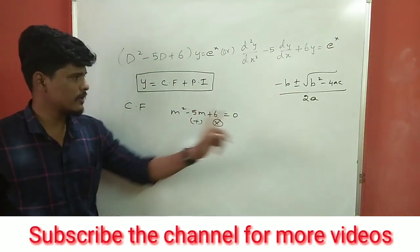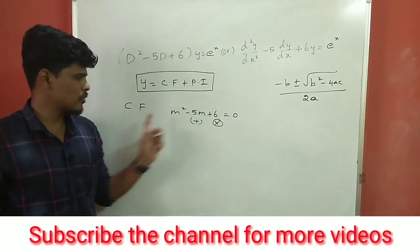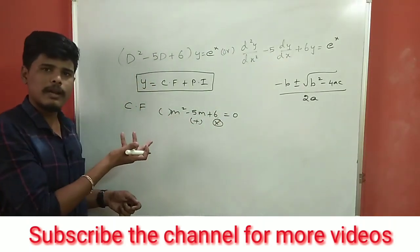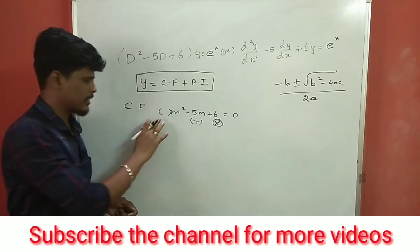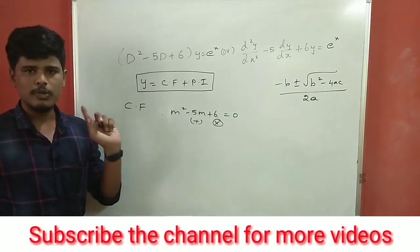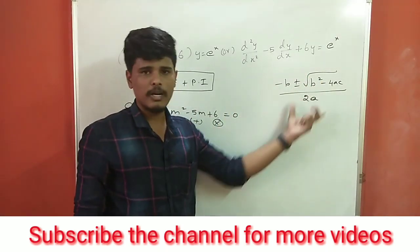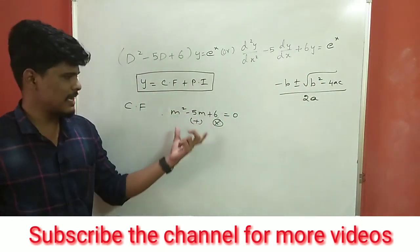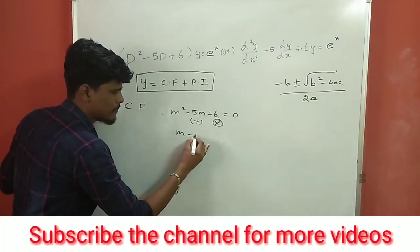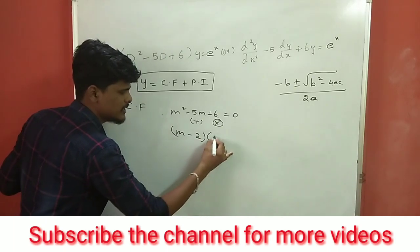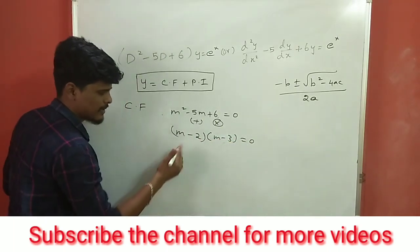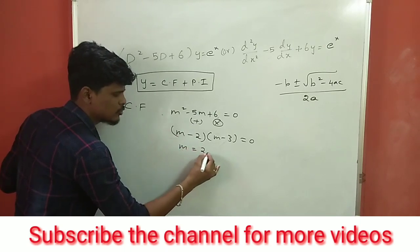In the quadratic formula, b is the middle coefficient, and a is the first coefficient. If no coefficient is written, it is 1. So a = 1, b = −5, c = 6. Substituting these values, we get the roots. M minus 2 gives one solution, M minus 3 gives another, so M equals 2 and 3.